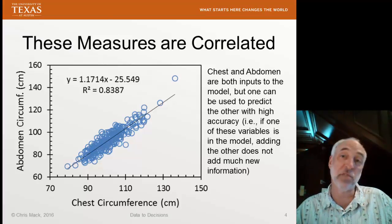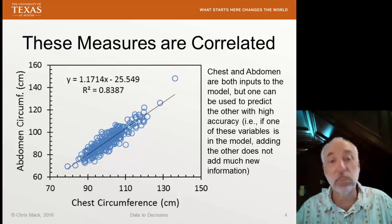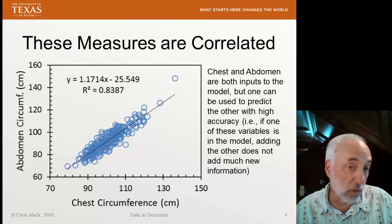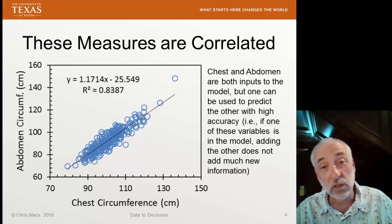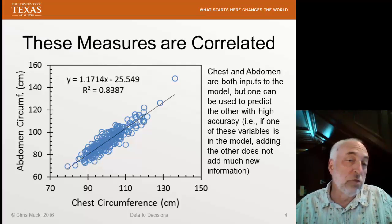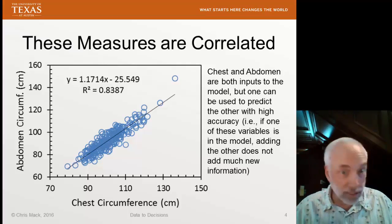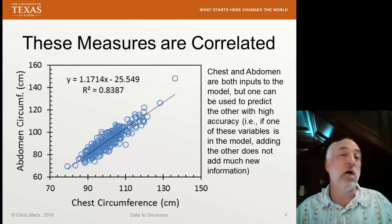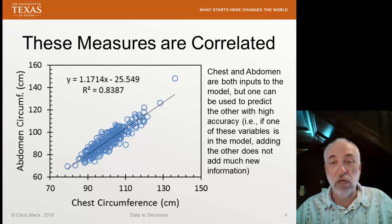Here's the problem: many of these measures are highly correlated. For example, if I measure the abdomen circumference around your gut and I measure around your chest, those two measures are highly correlated — a correlation coefficient of about 0.92. You have to ask yourself: if I measure one, do I get any extra information by measuring the other? If they were perfectly correlated, there'd be no new information. Since they're highly correlated, most of the information from one measure may already be captured by the other.